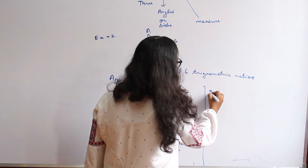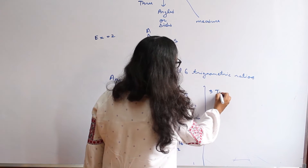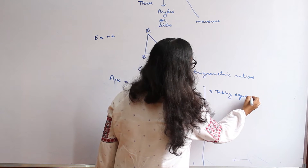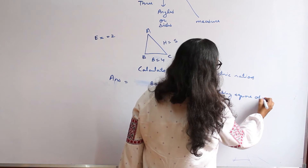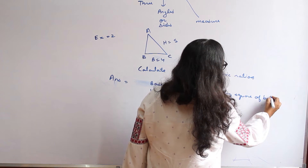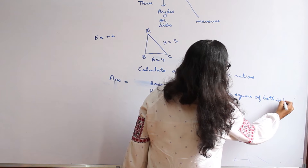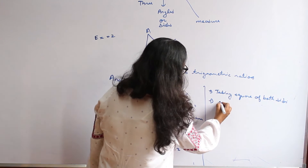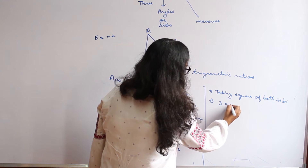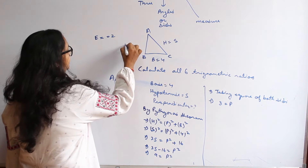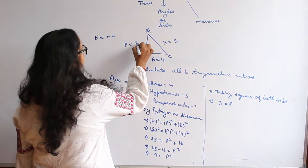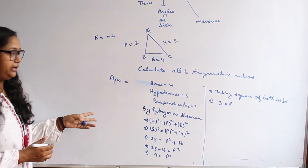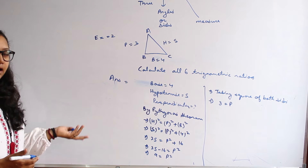To find the perpendicular, we take the square root of both sides. It comes out to be 3. Now that the perpendicular is known to us — that is 3 — we can calculate the other trigonometric ratios as we did earlier.